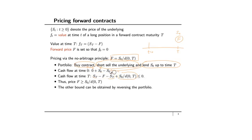Rearranging terms, S_T cancels with minus S_T, and we get the bound that F must be greater than or equal to S_0 divided by D(0,T). The other bound — F must be less than or equal to S_0 divided by D(0,T) — can be computed by reversing the portfolio: selling the contract, buying the underlying, and borrowing S_0 up to time capital T. Together, both bounds imply F equals S_0 divided by D(0,T).